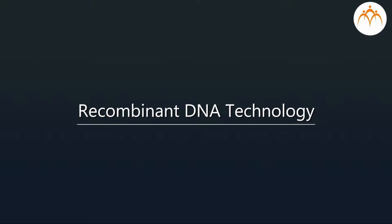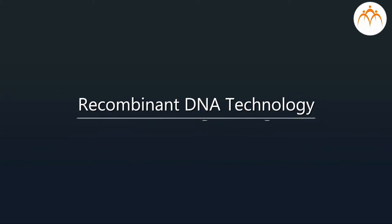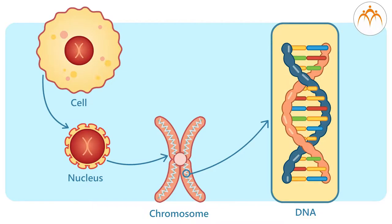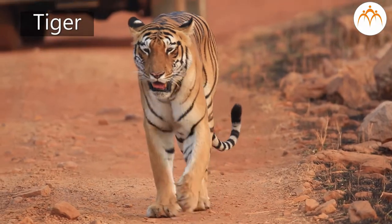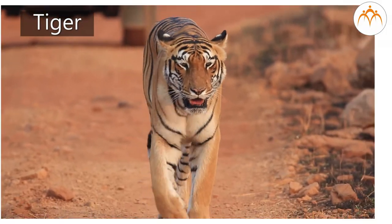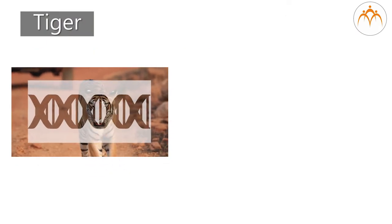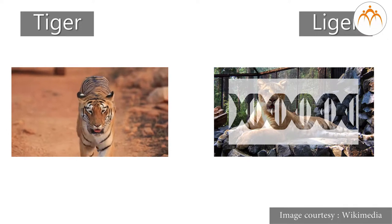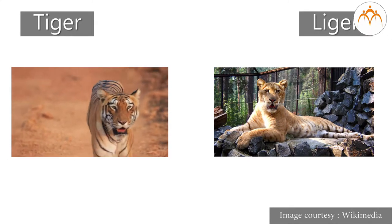You have probably heard of a more common name used for the same, i.e. genetic engineering. By now, I am sure you have a clear understanding of how genes or DNA carries information and controls various structural and functional aspects of cells and in turn complete organisms. Genetic engineering involves techniques using which genes from an organism belonging to one species can be transferred to an organism of another species. In this way, any desirable trait or character can be bestowed on a chosen organism by genetically modifying it.